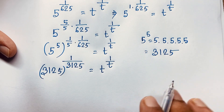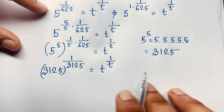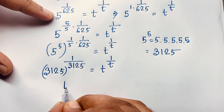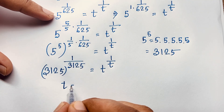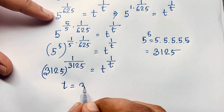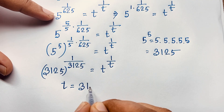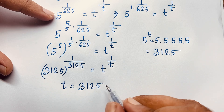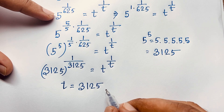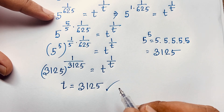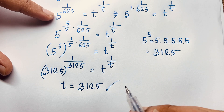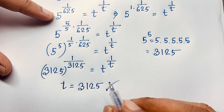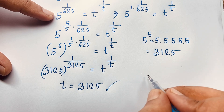Now, interesting — if I compare both sides, you can see that t is equal to 3125. This is our final answer to this interesting exponential math question.